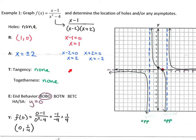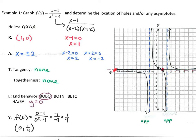I go to T and check for tangency and togetherness, looking for squared factors in the top and bottom. Are there any squared factors in the numerator or denominator? No. So there is no tangency and no togetherness. For E, I look for end behavior. This is a Bobo — bigger on bottom — which means my horizontal asymptote is going to be y equal to 0. That's the dashed line along the x-axis.